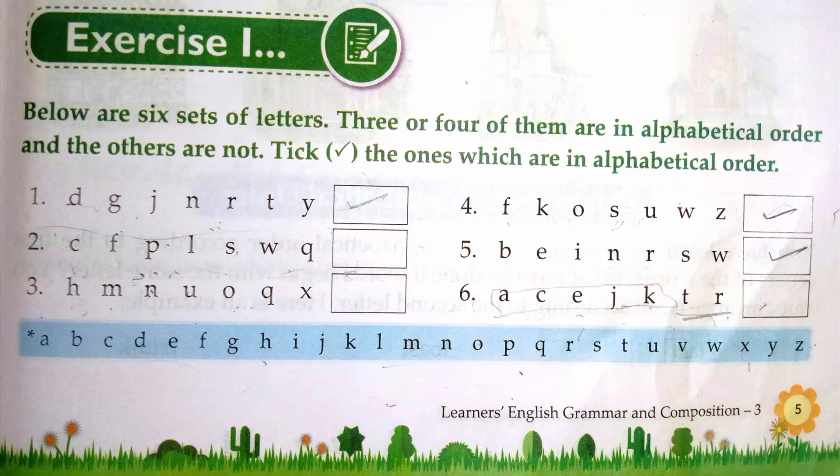So you can see, first one, here, firstly here A, B, C, D is written. Now D, you can see that G comes after D, J comes after G and D, N comes after D, G, J, R comes after D, G, J, N and so on. So this whole series is in alphabetical order. We put the tick in front of this.